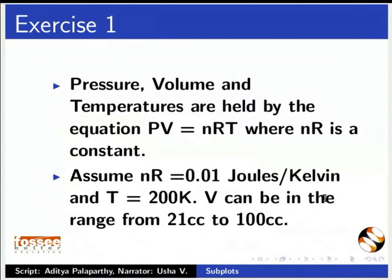Pressure, volume and temperatures are held by the equation PV is equal to nRT where nR is a constant. Assume nR is equal to 0.01 joules per kelvin and T is equal to 200 kelvin.